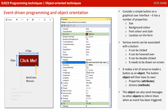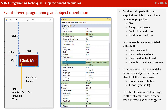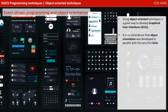Let's consider a simple button on a graphical user interface. It has a number of properties: a size, a background colour, a font colour and style, and a location on the form. Various events can be associated with a button — it can be clicked, hovered over, double clicked, and it needs to be drawn on the screen. It makes a lot of sense to model a button as an object. The button object will then have its own properties, which in OOP we'd call attributes, and have its own actions that we'd call methods. This object can also send messages to other objects to inform them when an event has been triggered, such as being clicked. Using object-oriented techniques is a great way to develop graphical user interfaces.